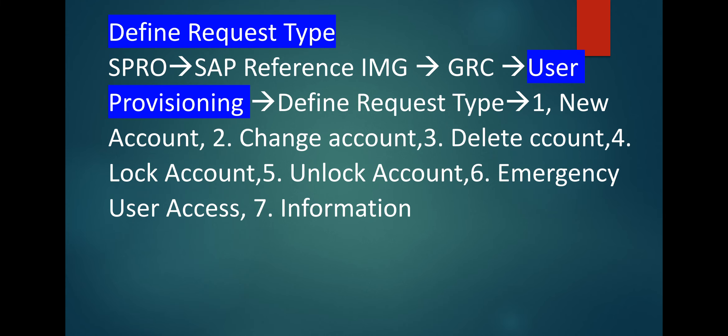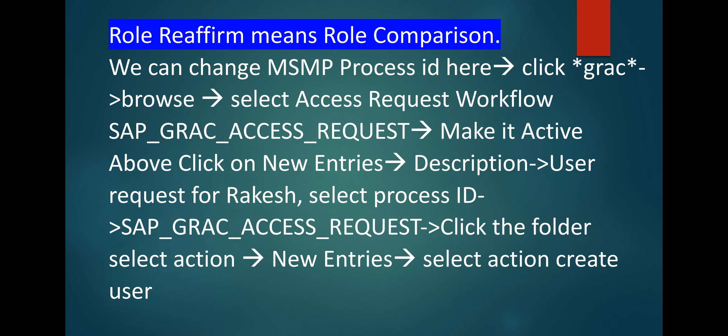Provide short description 'User Maintenance for SU01', long description the same, click on save. Next is define request type. Go to user provisioning > Define Request Type: first — new account, second — change account, third — delete account, fourth — lock account, fifth — unlock account, sixth — emergency user access, and seventh — information. Next is role reaffirm, which means role comparison. We can change the MSMP process ID here — click search criteria *GRC*, browse option, select access request workflow.